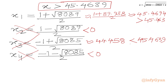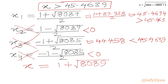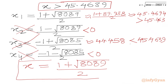So the only solution which satisfies our equation is (1 plus square root of 8089) over 2. I hope friends you will like this video. Thank you so very much for watching. Do not forget to like, share, and subscribe. Bye-bye till next video. Good luck. Take care.